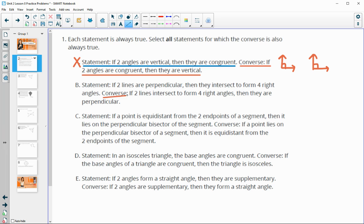The second one, the converse says if two lines intersect to form right angles, then they are perpendicular. So if we have two lines crossing and they form right angles, then they're perpendicular. That is true.